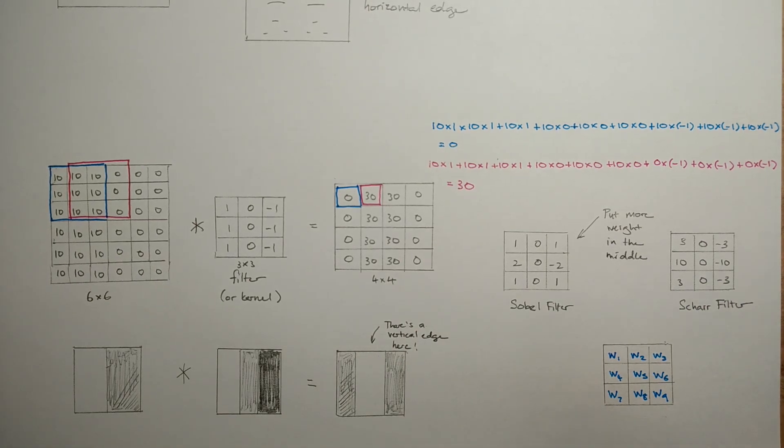The real benefit comes when you let the neural network learn its own filters. By treating the nine numbers as weights and running back propagation over it, the neural network would be able to learn filters that are better at capturing the statistics of your data than anything handcrafted.